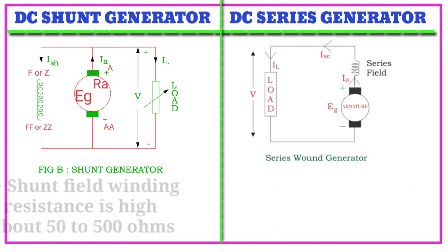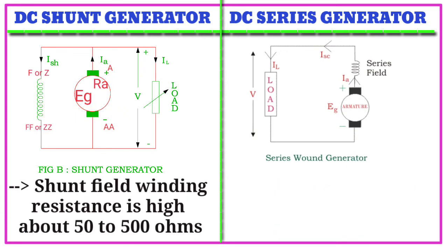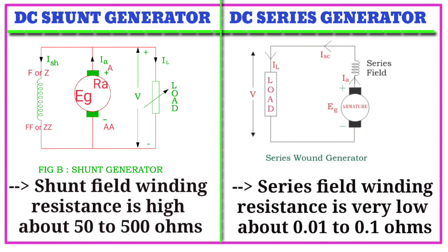Fourth point: shunt field winding resistance is high, about 50 to 500 ohms, whereas series field winding resistance is very low, about 0.01 to 0.01 ohms.